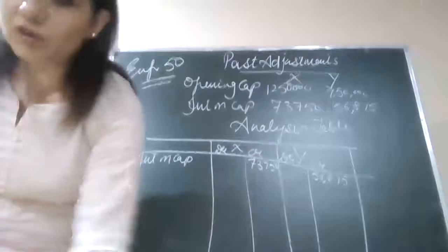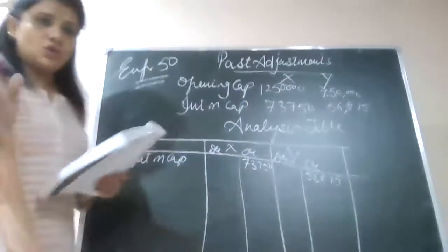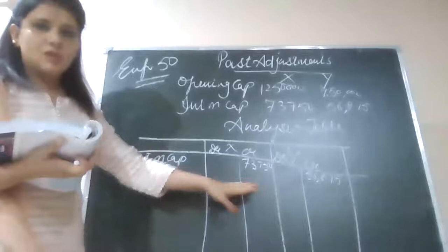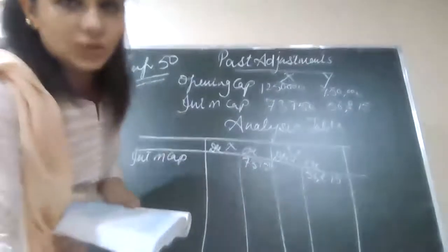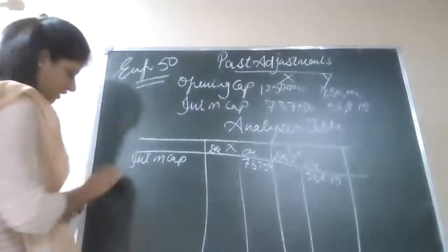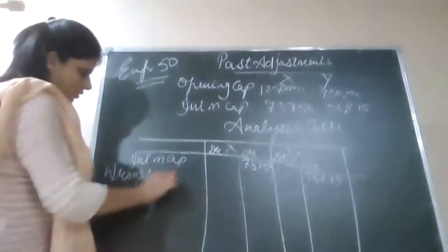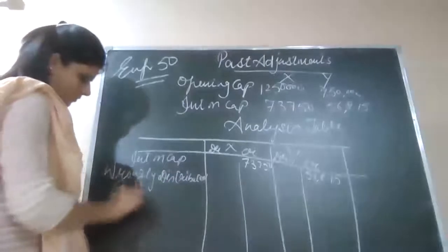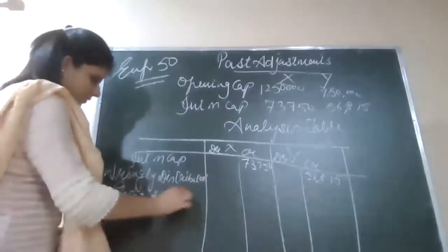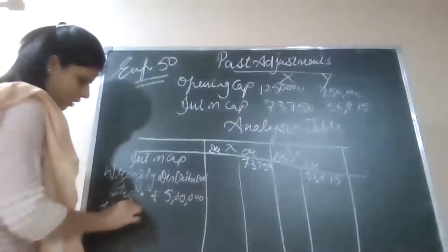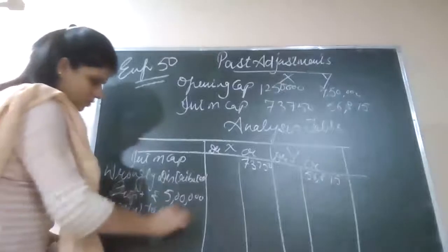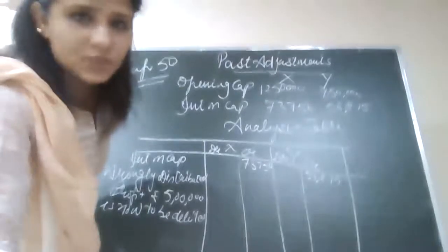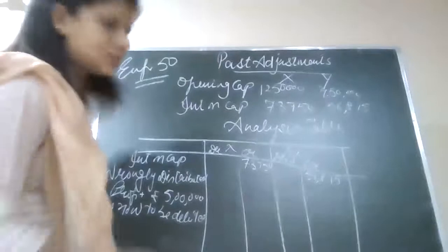The wrongly distributed profit was 5 lakh and we distributed it before charging this interest on capital. So I am going to take that back. 5 lakh split into 3/5 and 2/5. So wrongly distributed profit is now to be debited. Taking back 3 lakh from the partners — we just debit them.